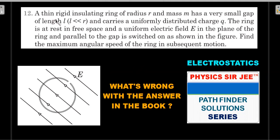A thin rigid insulating ring of radius r and mass m has a very small gap of length l, this small gap which is very small compared to the radius of the ring, and carries a non-uniformly distributed charge q.